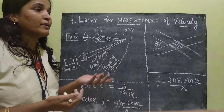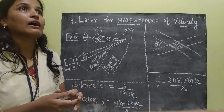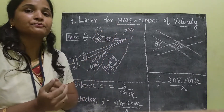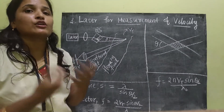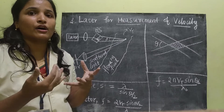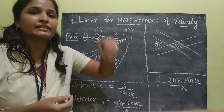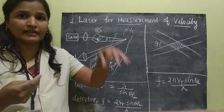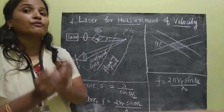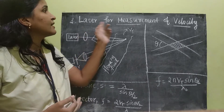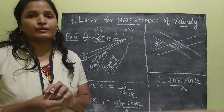The second advantage is that because of this non-contact detection, it is used for finding the velocity of hot liquid or corrosive liquid, where inserting a device for measurement of velocity is not possible. For those applications, this measurement is very useful.